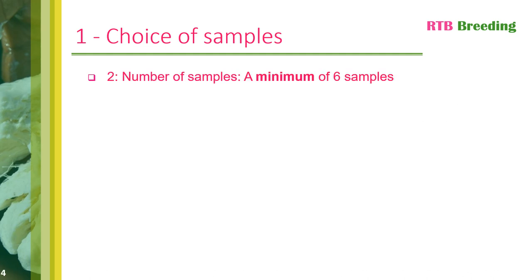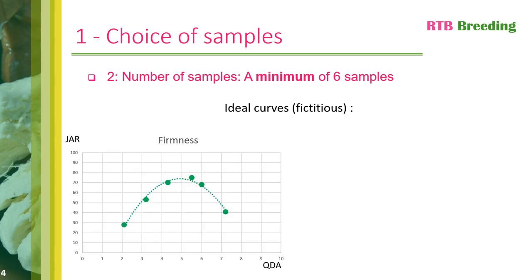The second point to address is the number of samples. As I pointed out in the previous module, you need to study at least six samples to be able to draw curves and calculate acceptability thresholds. Here are two ideal and fictitious curves that can be obtained from six points. On the left-hand curve for firmness, there is a bell-shaped curve. This curve makes it easy to see that when the product is too firm or not firm enough, the majority of consumers do not appreciate the product.